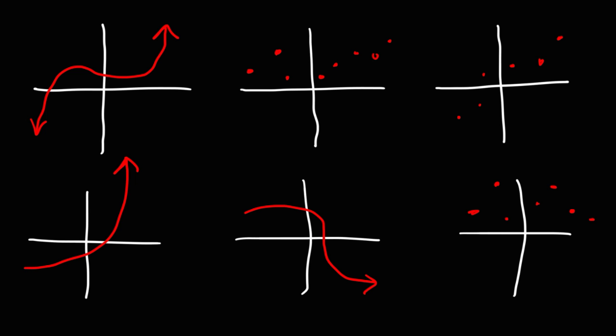Looking at the first one on the top left, would you say it's continuous or discrete? For it to be continuous, there can't be any discontinuities or jumps in the graph. Basically, it's going to be a connected line. All the data in this graph is connected, so this would be continuous.